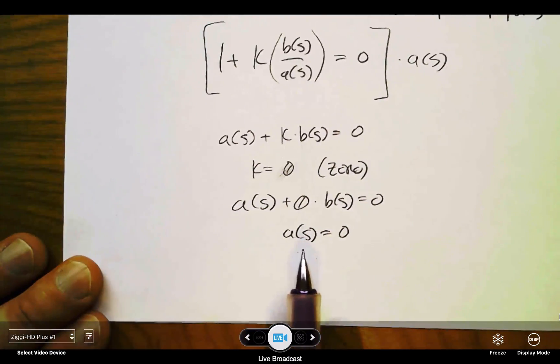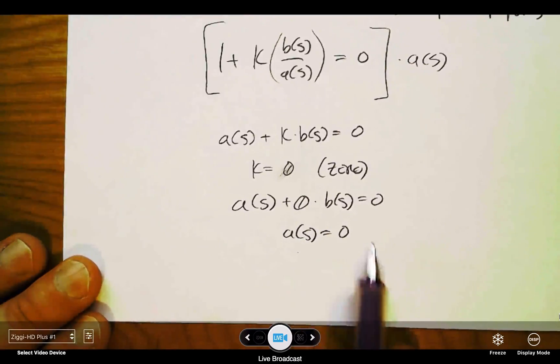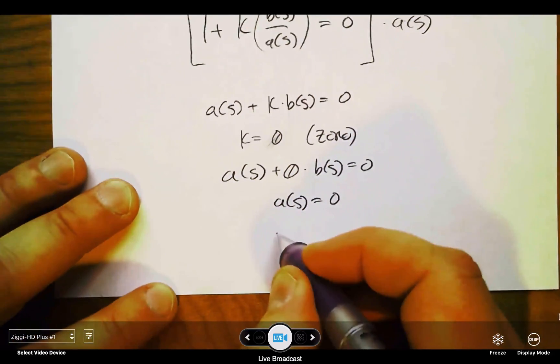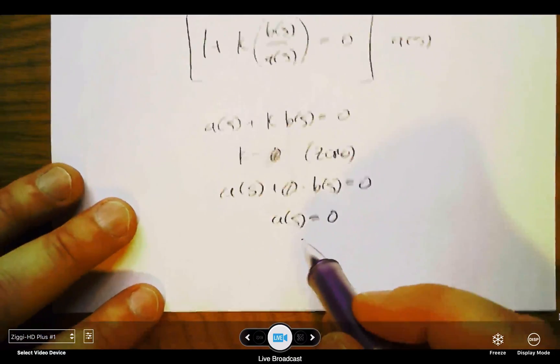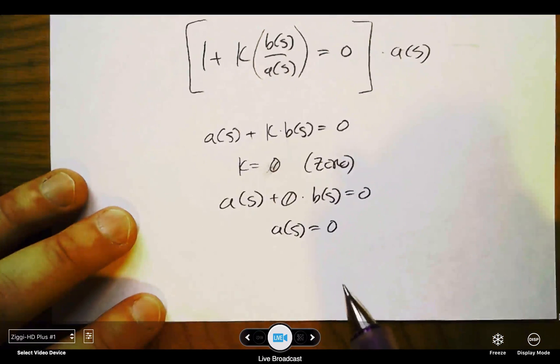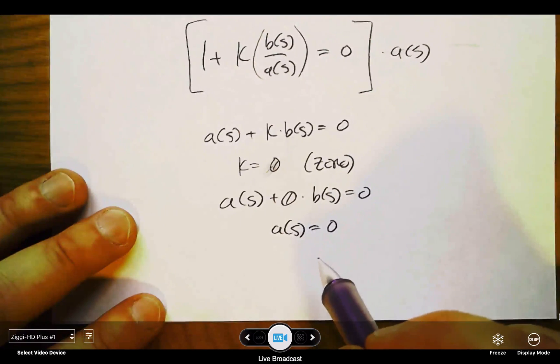So if k is equal to zero, I just have a(s) equal to zero. Well, the roots of this should obviously be the open-loop poles. So when k equals zero, the roots of our characteristic equation are the same as the open-loop poles of L(s).